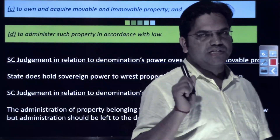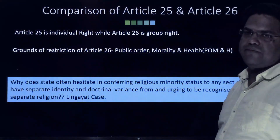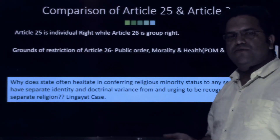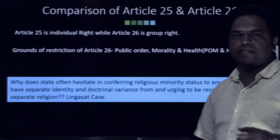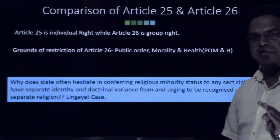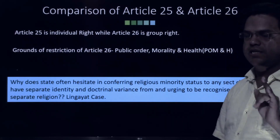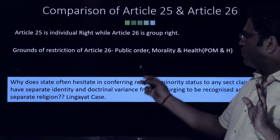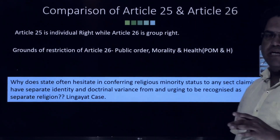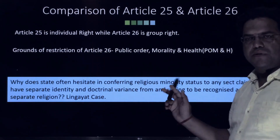Let us see the comparison between Article 25 and Article 26. On two grounds they differ: Article 25 extends rights to individuals, while Article 26 extends rights to a religious denomination or group. The grounds of restriction also differ — Article 25 can be restricted on grounds of public order, morality, health, and other provisions of Part 3, while Article 26 can be restricted only on public order, morality, and health. The 'other provisions of Part 3' ground present in Article 25 is missing from Article 26 — this is a question for you to consider.